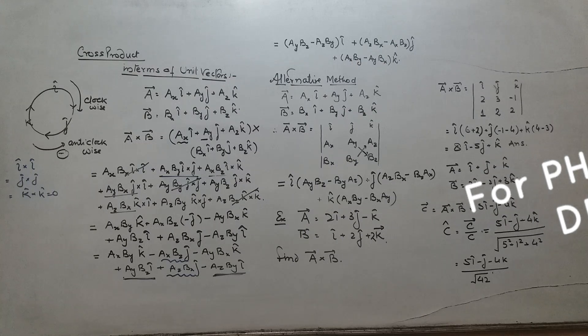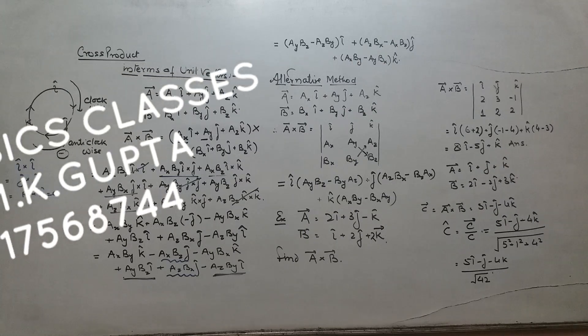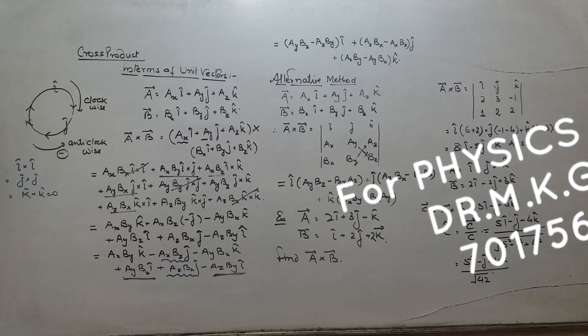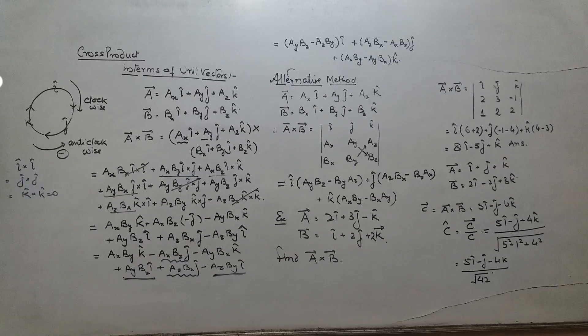If we shall move in anticlockwise direction, then the sign will be taken negative. Means i cross j is plus k but j cross i will be minus k.